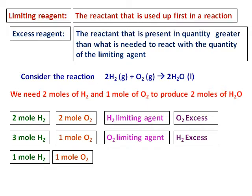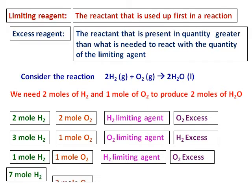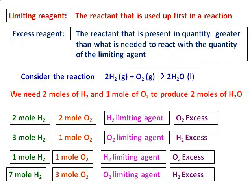One more case: when I have equal moles of hydrogen and oxygen — 1 mole each. The amount of hydrogen present should be twice that of oxygen, and I don't have enough, so hydrogen is the limiting agent in the third case and oxygen is present in excess. The last case is 7 moles of hydrogen and 3 moles of oxygen. The amount of oxygen has to be half that of hydrogen, so I should have 3.5 moles of oxygen. But I have only 3, hence oxygen will be the limiting agent and hydrogen will be left over.